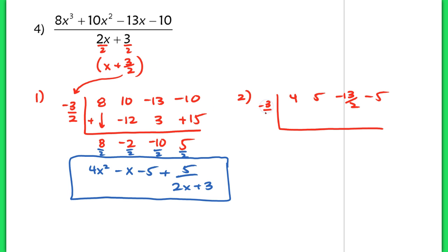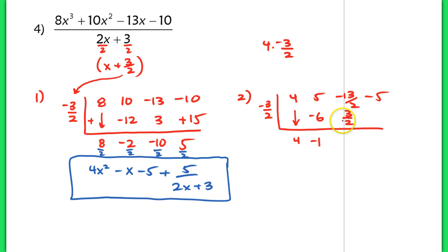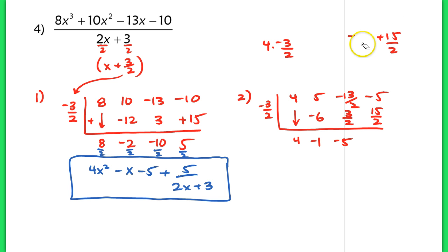I keep that negative 3 halves on the outside and do synthetic division like normal. Drop that first term down. 4 times negative 3 halves — it's okay that we have a fraction. We end up with negative 6. 5 plus negative 6 gives me negative 1. Negative 3 halves times negative 1 gives positive 3 halves. Adding negative 13 halves and 3 halves, I get negative 10 halves, which simplifies to negative 5. Then negative 5 times negative 3 halves gives positive 15 halves. Sometimes people don't like this method because of the fractions, but it's still faster than long division. Now negative 5 plus 15 halves — I need a common denominator, so I change that to negative 10 halves plus 15 halves, giving positive 5 halves.